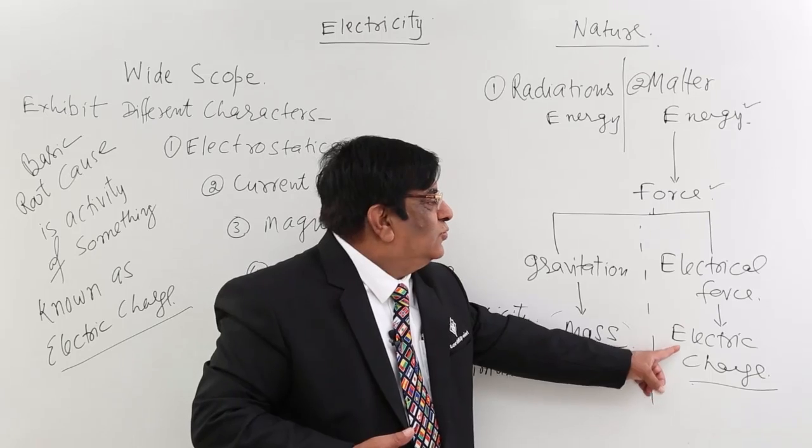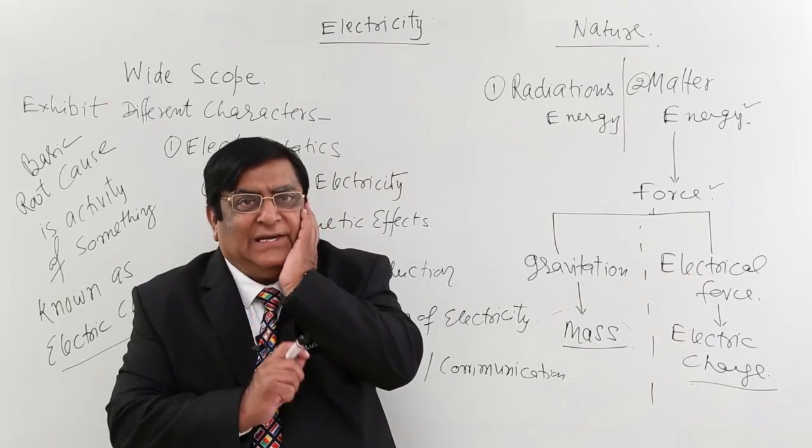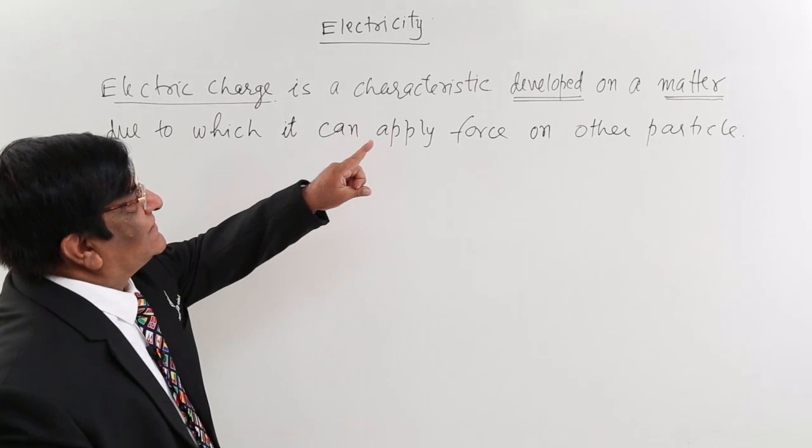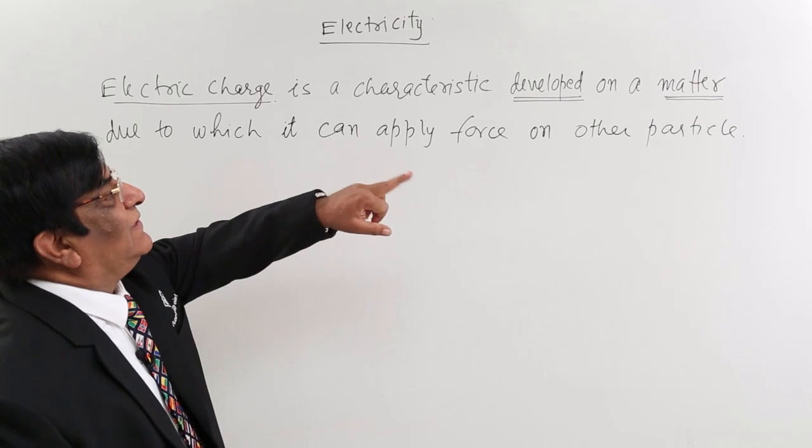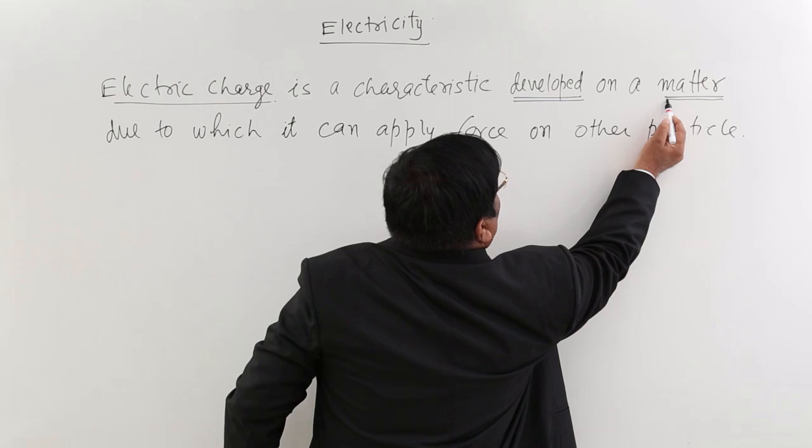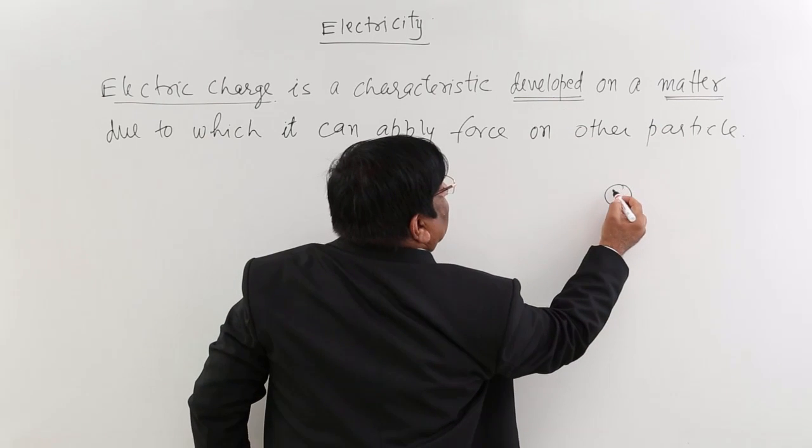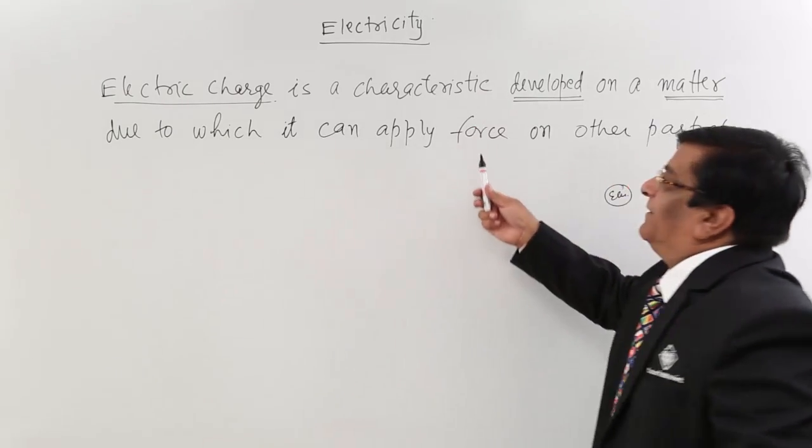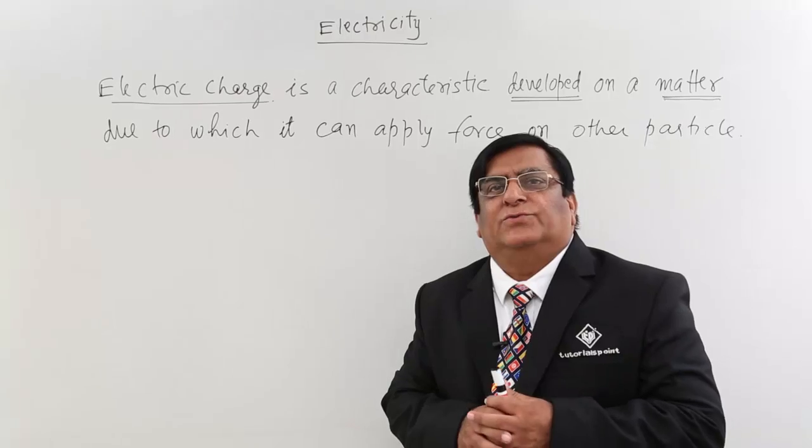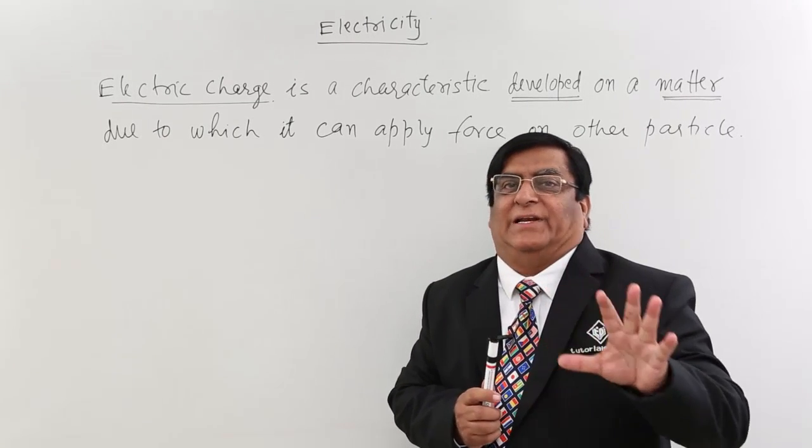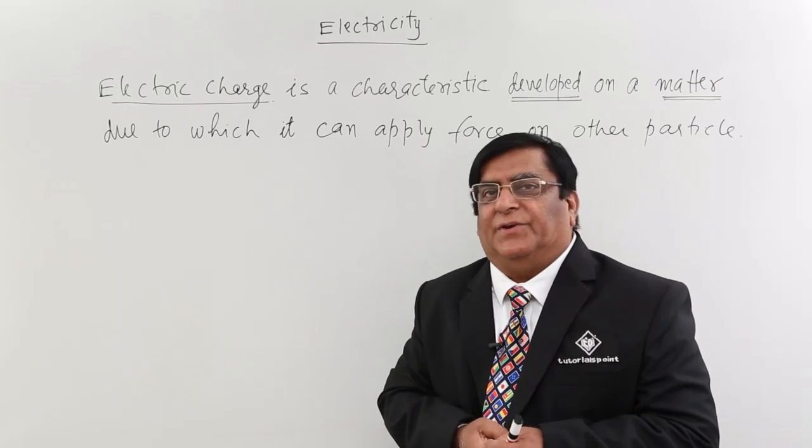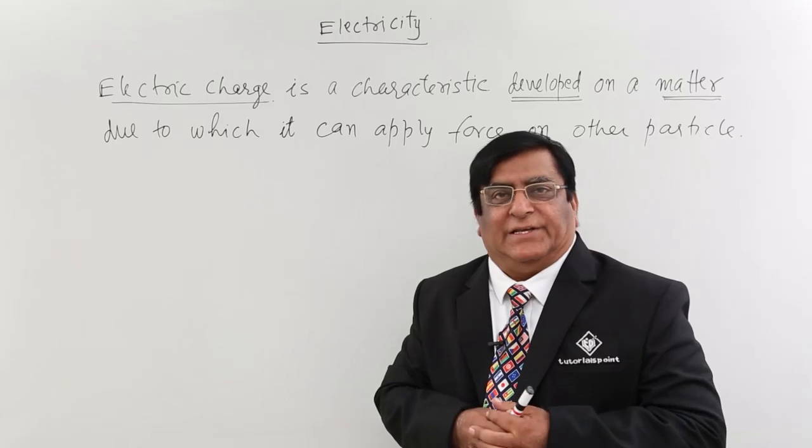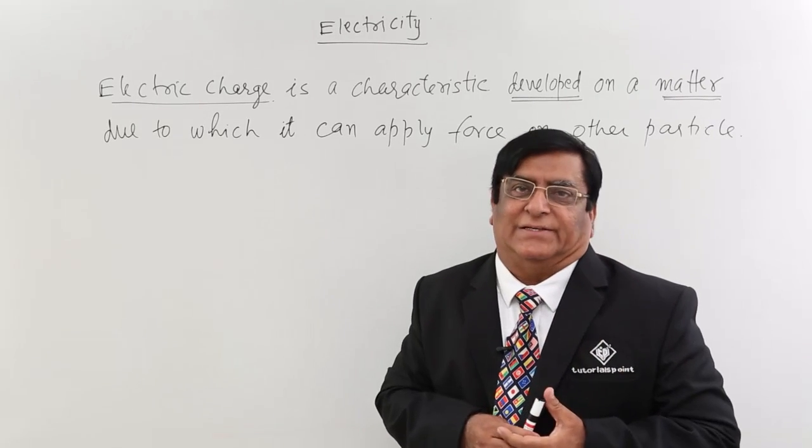So now, can we define it in the words? We can define it very well in the words. So now we can write definition. Electric charge is characteristic developed on a matter, due to which it can apply force on other particle. So remember two things. One is, this has to be a matter. And on that matter, this characteristic is developed. Electrical charge. So matter is compulsory for electric charge. And now this is the definition. You can note down for purpose of definition. So we have studied what is electric charge. Only what is electric charge, this we have studied today. How large is the electricity that we have seen today. But now this electric charge, we have to find out how many type of charges are there. What are their characteristics? And these we will study in the next class. Thank you.